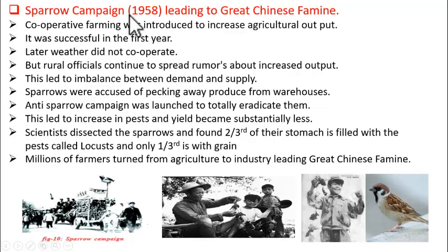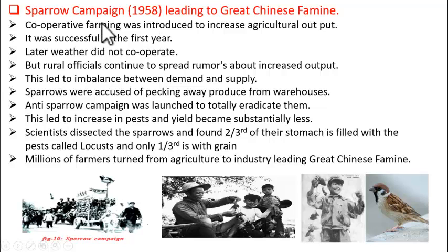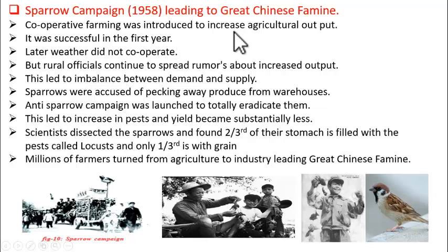What is this cooperative farming? In this type of farming, the farmers are divided into groups. Each group contained 5,000 families and they had to do group farming. That is what is called cooperative farming.